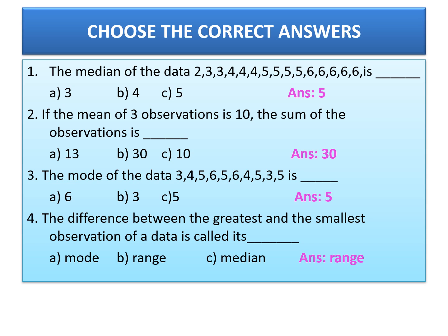So the answer is 30. Now, the mode of the data 3, 4, 5, 6, 5, 6, 4, 5, 3, 5 is dash. Mode means the repeated number — which number repeats the maximum number of times? Is it 6? No. Is it 3? No. The number 5 is coming 1, 2, 3, 4 times — repeating 4 times. So the answer will be 5.